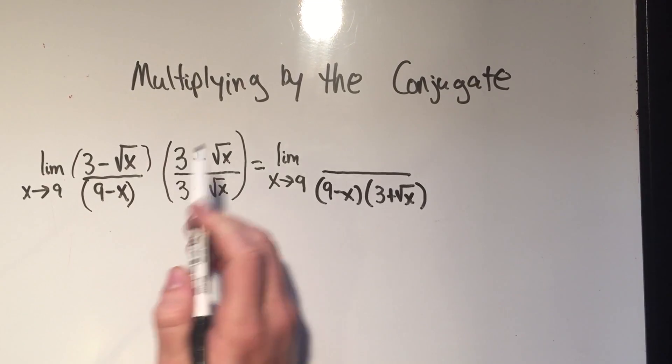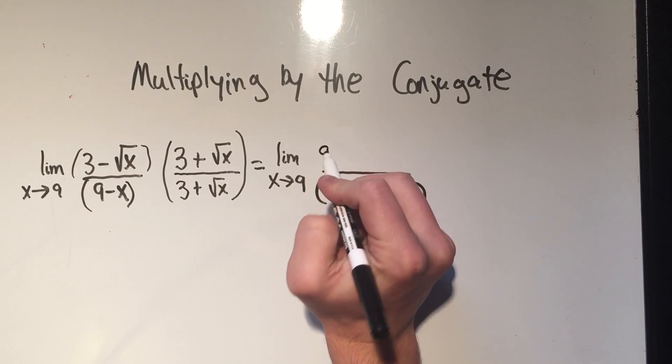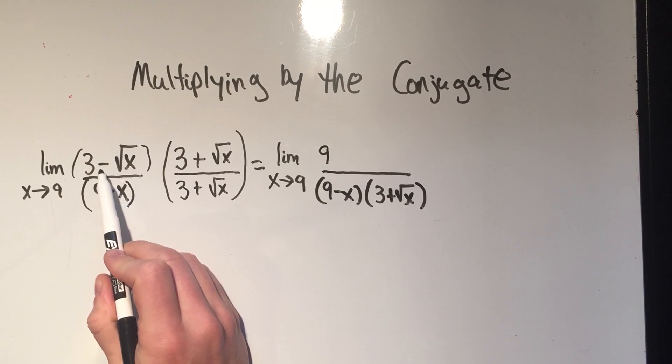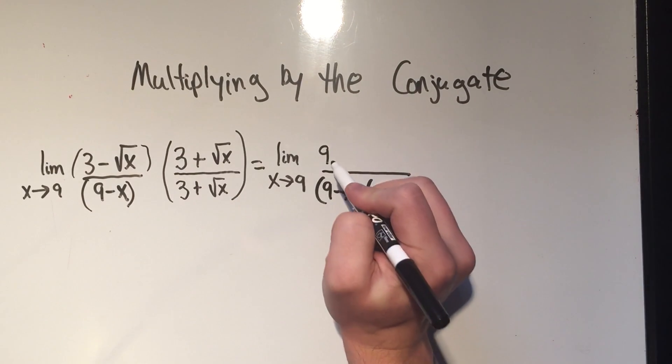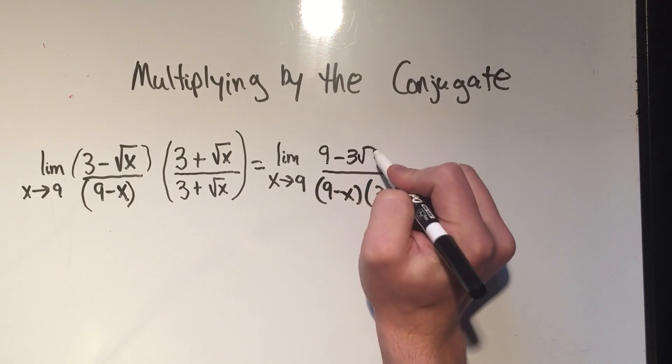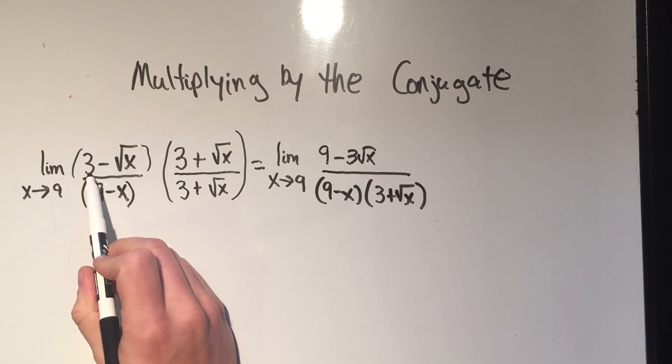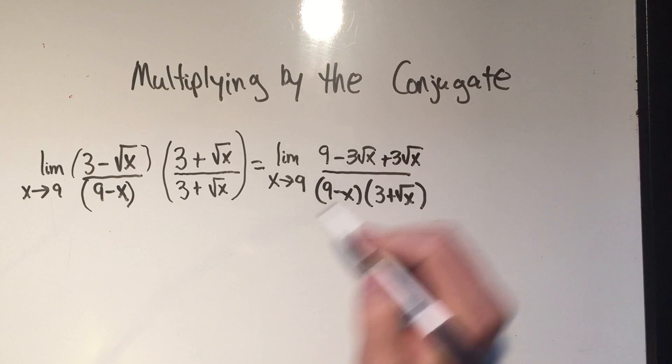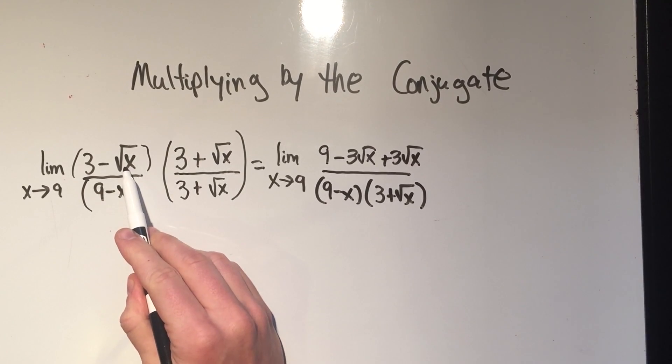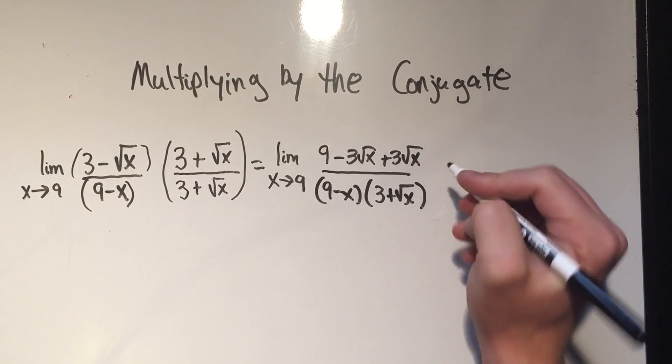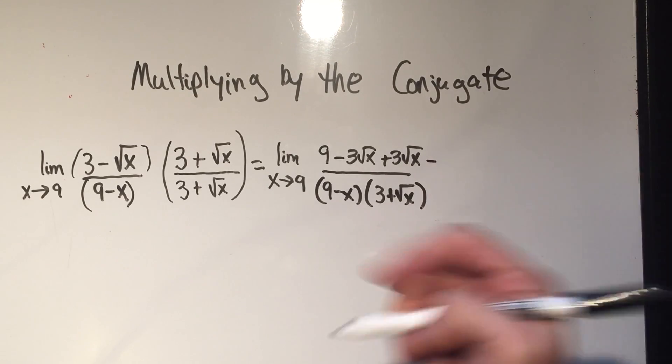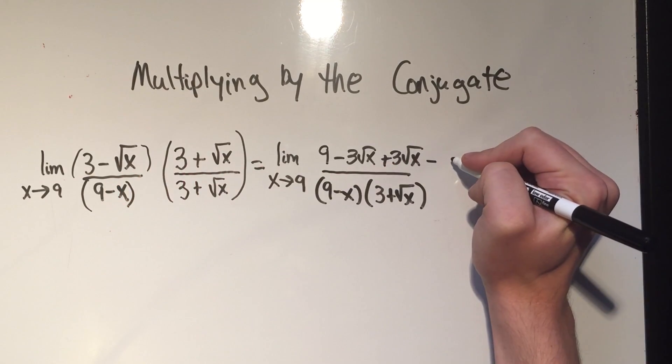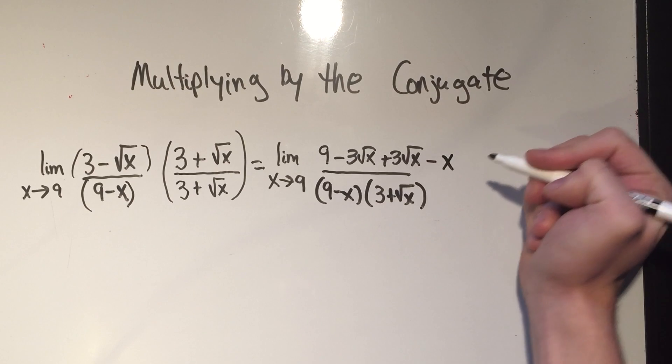So let me foil this. Foil says first, 3 times 3 is 9. Inner, that's minus root x times 3, that's minus 3 root x. Outer, 3 times root x is plus 3 square root of x. And then last, minus root x times plus root x, that's minus x, because root x times root x just gives me x.